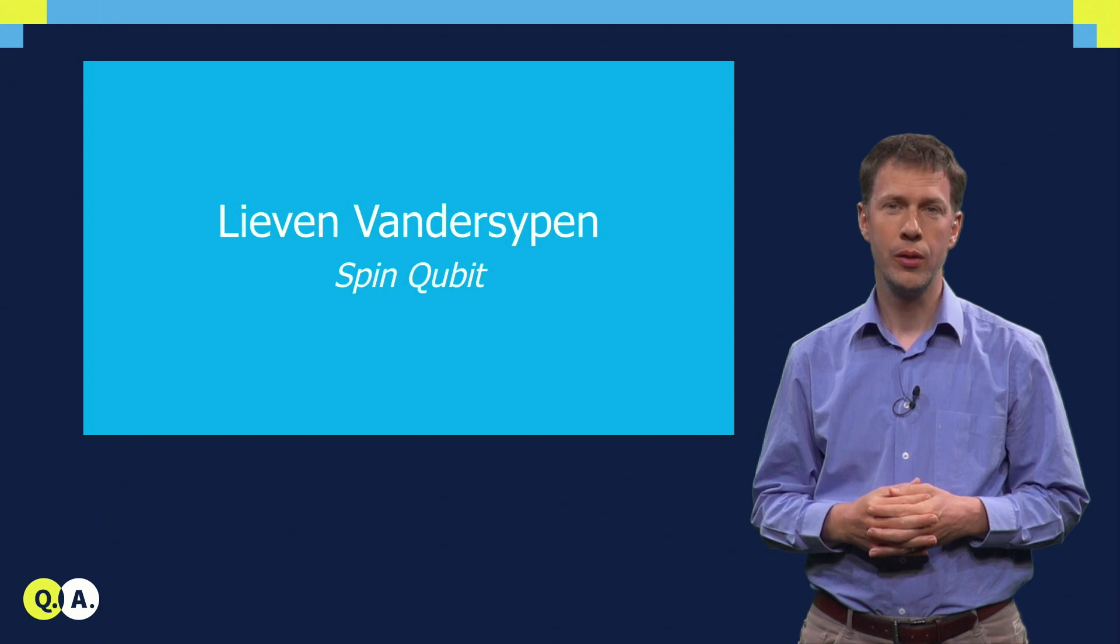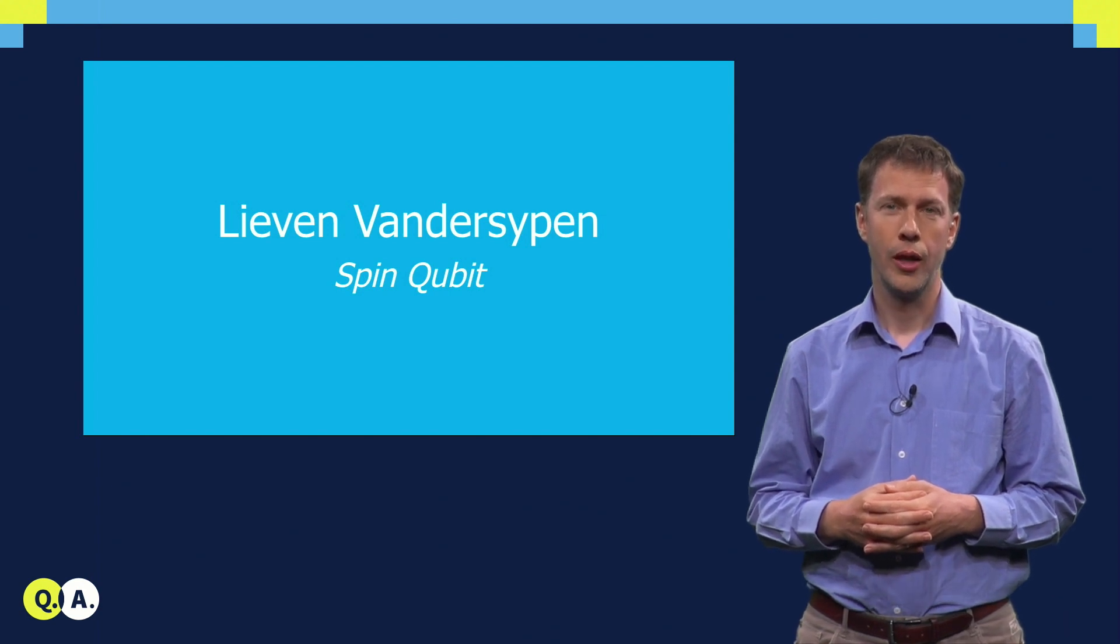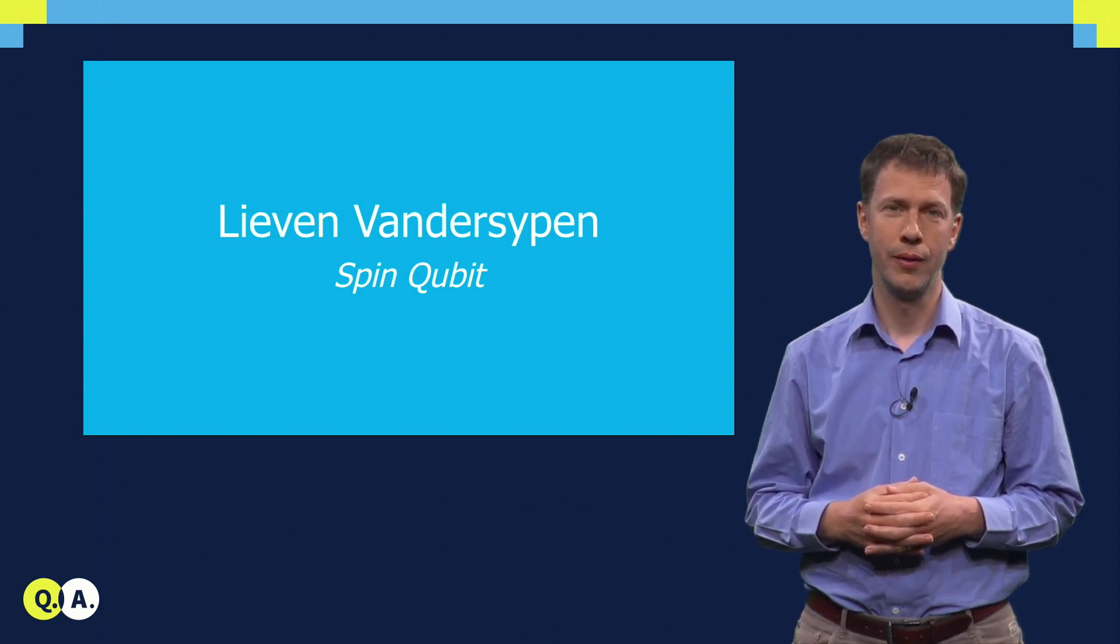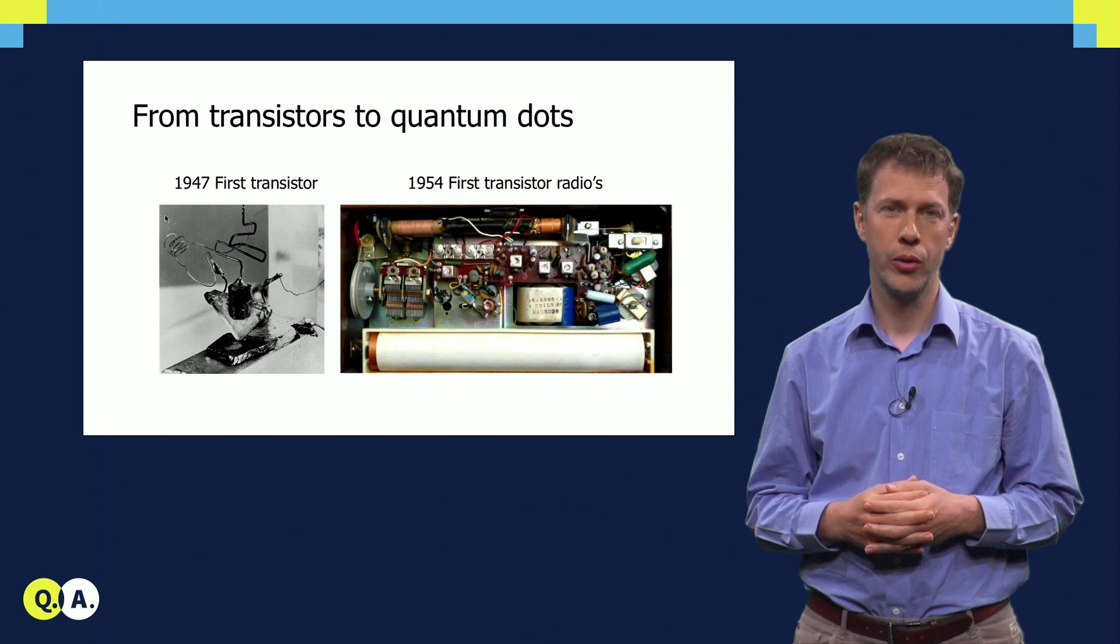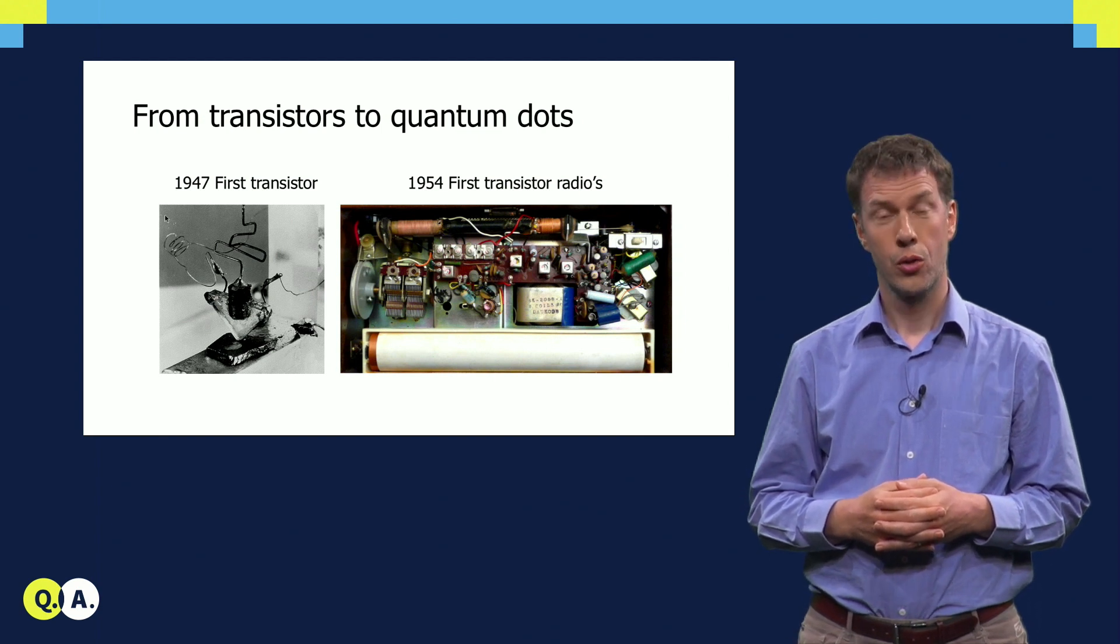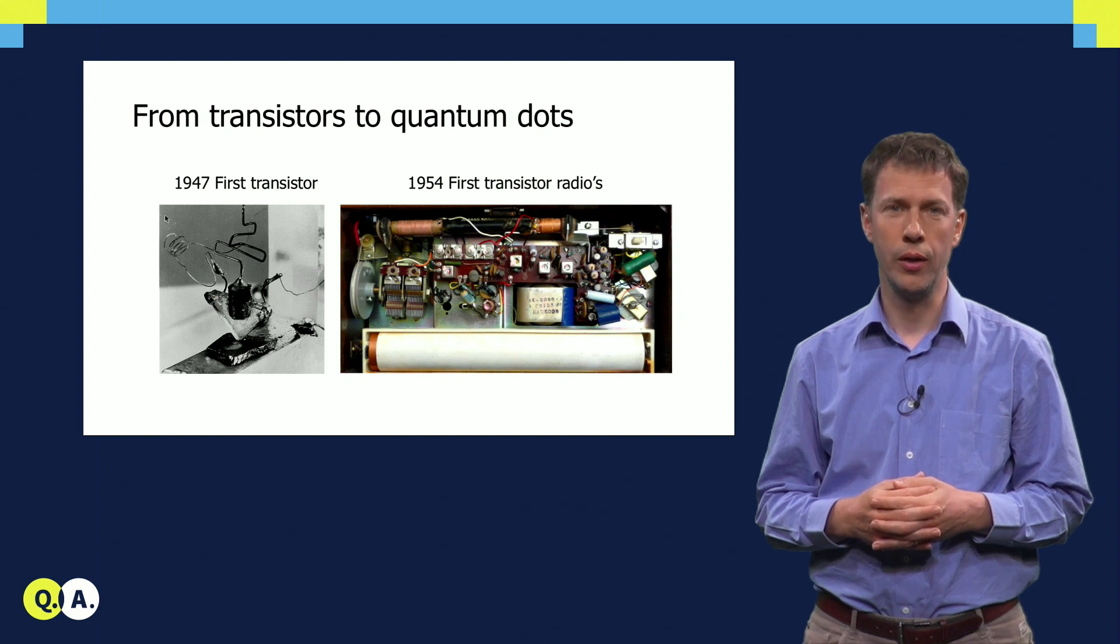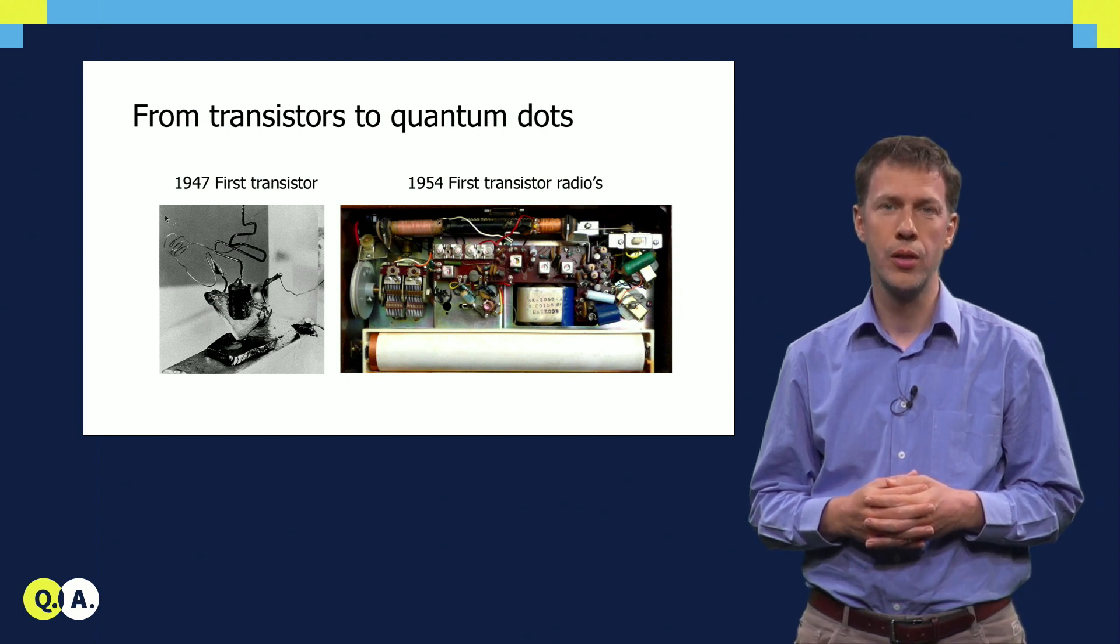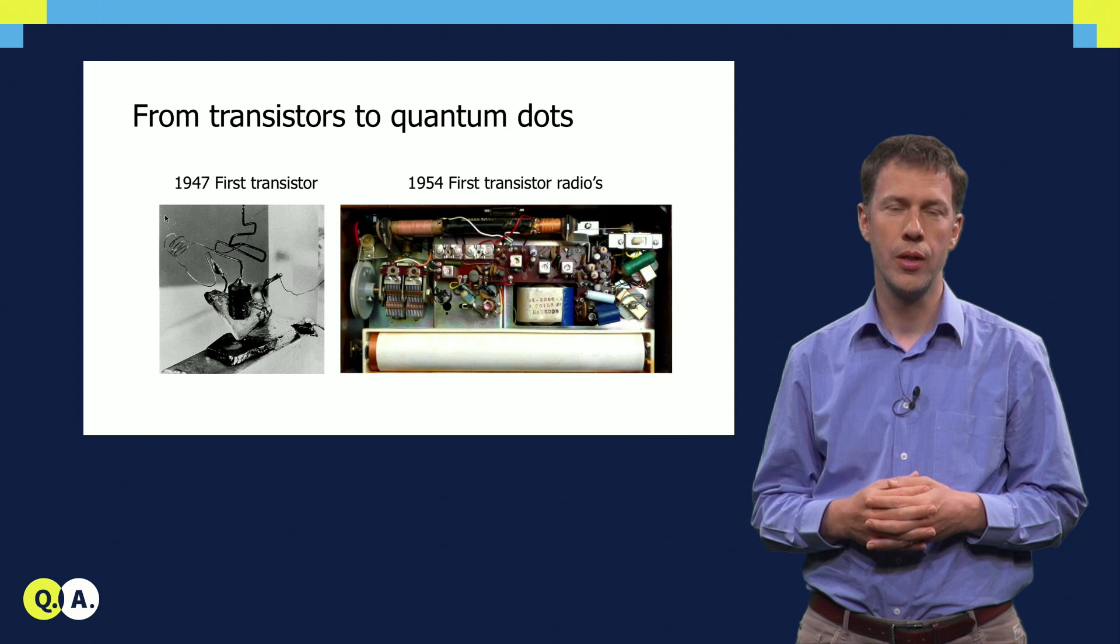When we look back at the development of semiconductor technology, a great moment was in 1947, the demonstration of the first transistor. Shortly after that, people began to put several transistors together on a circuit with capacitors and resistors, and developed the first transistor radio.